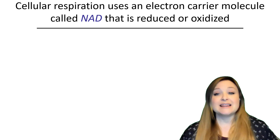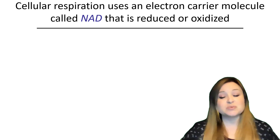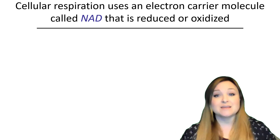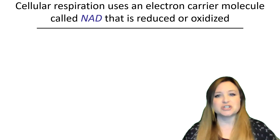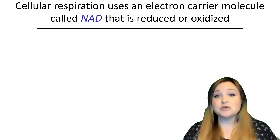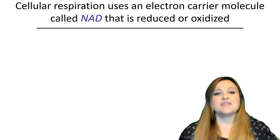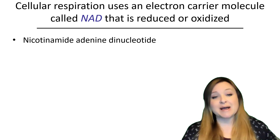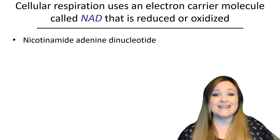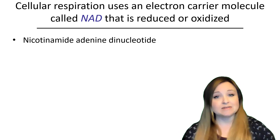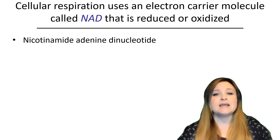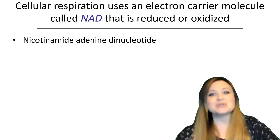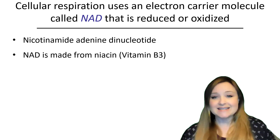In cellular respiration, there's an electron carrier molecule called NAD that is reduced or oxidized. During the reactions of cellular respiration, the food molecules we eat are broken down and the electrons are stripped from those food molecules. As the food molecules lose their electrons and are oxidized, the molecule called NAD+ picks up those electrons. NAD stands for nicotinamide adenine dinucleotide — it's just two nucleotides bound together. NAD is actually made from niacin, which is vitamin B3.